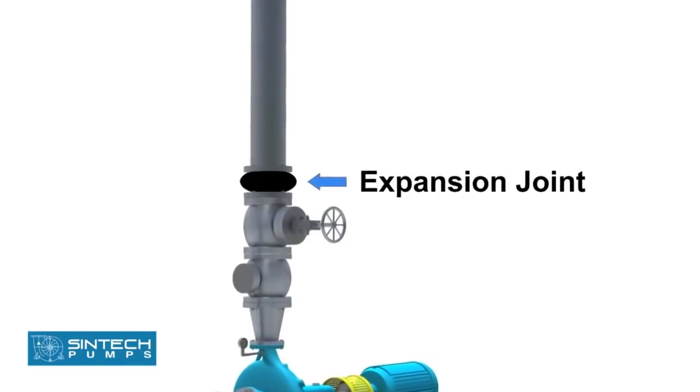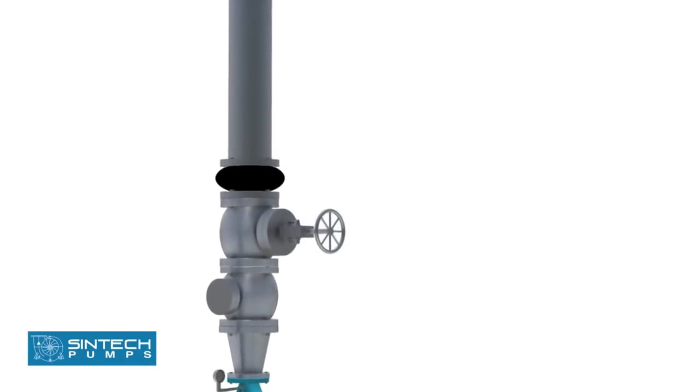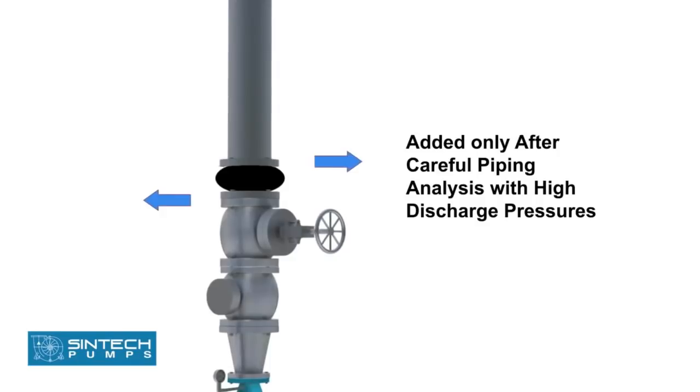Expansion joints may be used only after a careful piping analysis, especially when the discharge pressures are on the higher side.